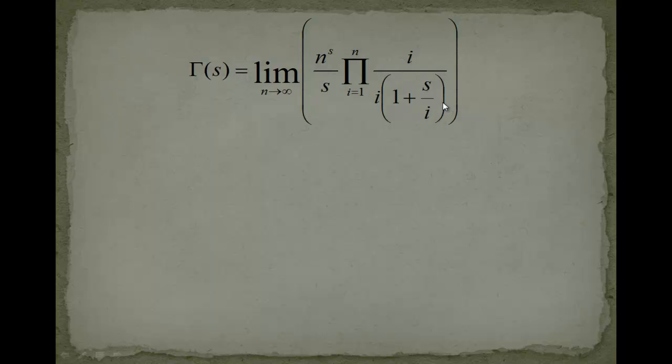Now, we are not only using this gamma of s, but we will also plug in minus s. You will see why. Soon, okay, we plug this in, minus s will give you n to the minus s here and minus s, and in this product thing here we get minus s over i.